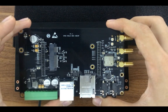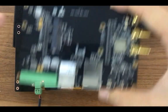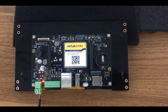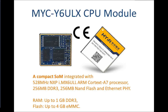Let's check the details about this HMI display panel. The development board is powered by MIR's MYC-6UL-AX CPU module, which is a compact SoM integrated with a 528 MHz NXP i.MX 6UL ARM Cortex-A7 processor, 256 MB DDR3, 256 MB NAND flash, and Ethernet. The RAM can optionally be expanded up to 1 GB DDR3, and there is an option for 4 GB eMMC.